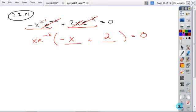And so now we can take each individual factor, set it equal to zero, and solve using the zero product rule. So here's our first factor, x equals zero. Here's our second factor, e to the minus x equals zero. And here's our third factor, negative x plus two equals zero.